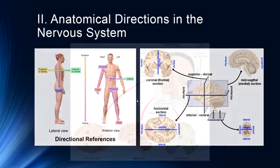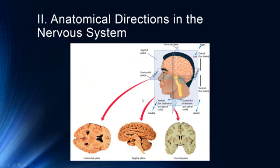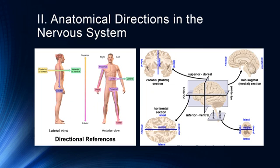The reason this gets confusing is that these directions were originally designed for creatures that walk on all fours. In a cat or dog, the top side of the brain is in the same direction as the top side of the spine. These terms were designed for animals and then adopted for humans in a not particularly clear way. The dorsal side of the brain is the top and the ventral side is the bottom — important because we'll talk about the dorsal stream and the ventral stream. For example, the dorsal lateral prefrontal cortex is dorsal (top), frontal (front), and lateral (towards the edge).